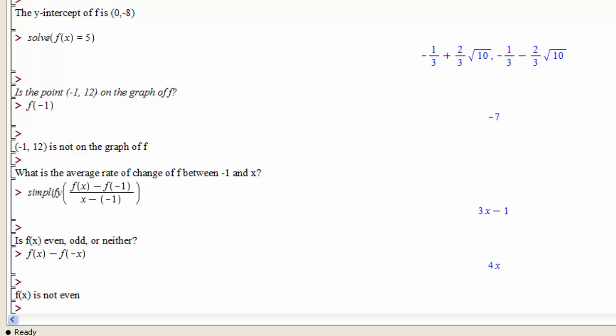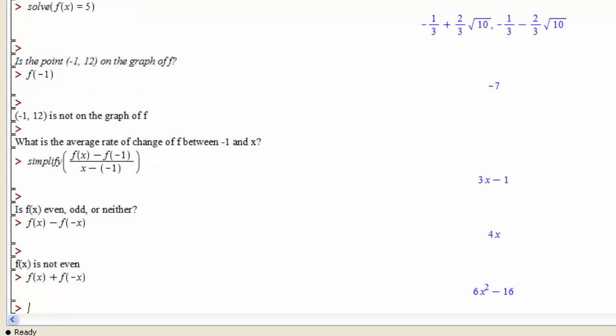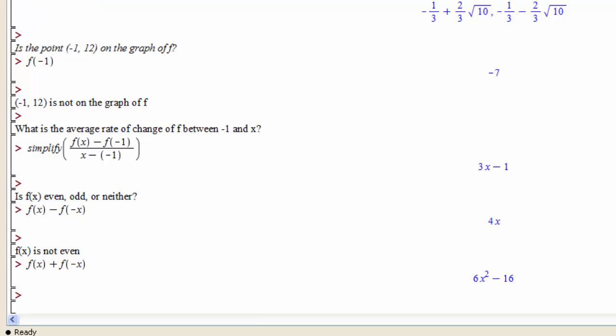an odd function has f(x) equal to the negative of f(-x). So to test that, you ask what is f(x) + f(-x). If that's 0, then your function is odd. If it's something else, then that function is not odd. Here it's 6x² - 16. So we see that f(x) is not odd.